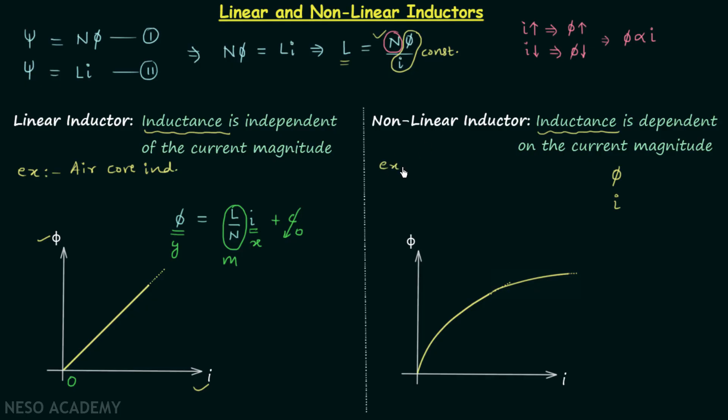The example is an iron core inductor, but we operate in this region. You can see that in this region the slope is constant, and hence the inductor is treated as linear.